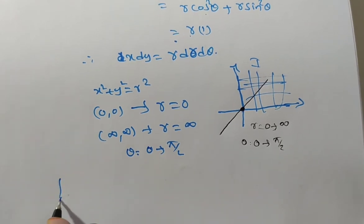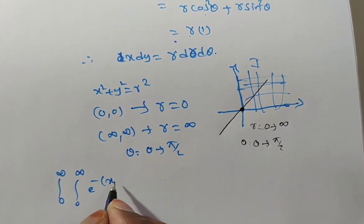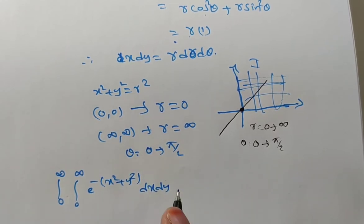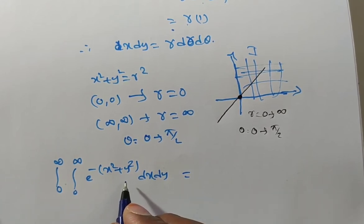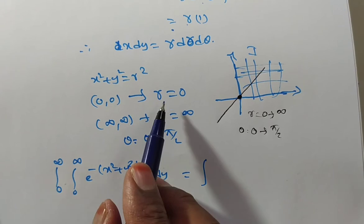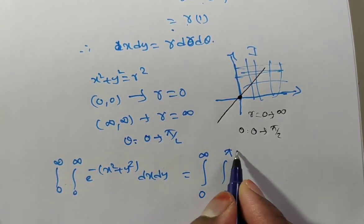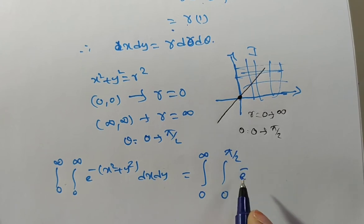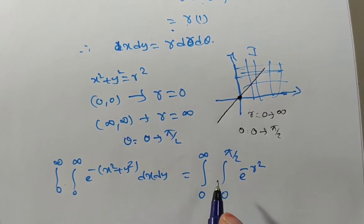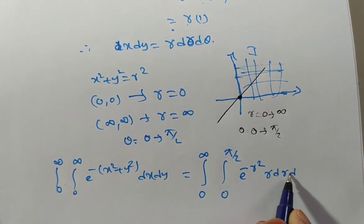Now substituting into the given problem: the integral from 0 to infinity, 0 to infinity of e to the power of minus x squared plus y squared, dx dy. Changing variables: r is from 0 to infinity, theta is from 0 to pi by 2. E to the power of minus x squared plus y squared becomes e to the power of minus r squared, and dx dy becomes r dr d theta.